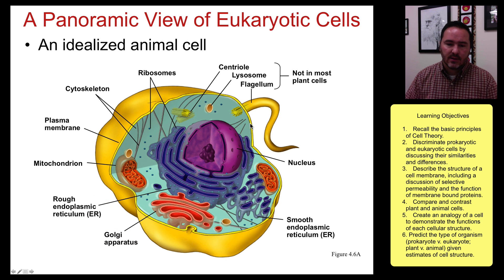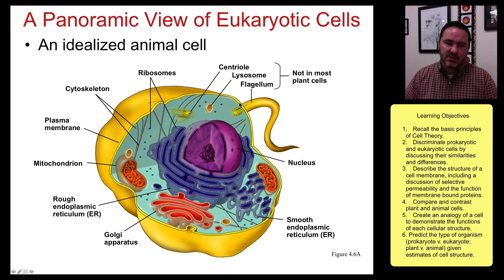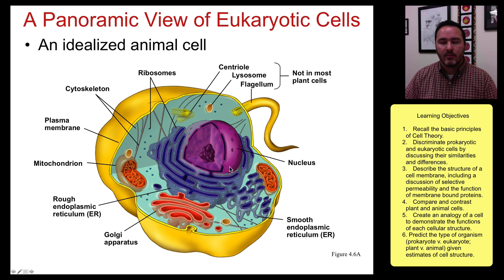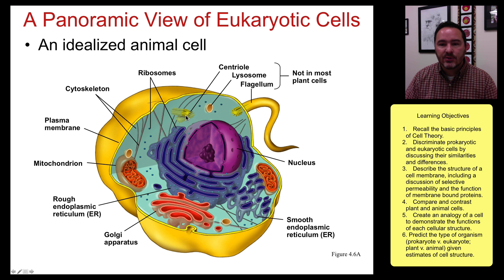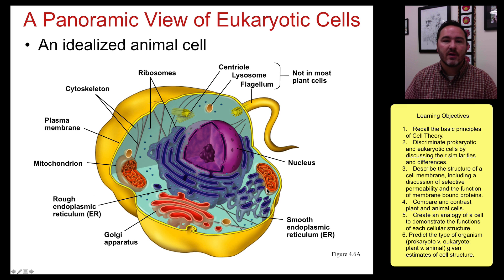A eukaryotic cell — in this case an animal cell — is much larger. It also has the plasma membrane and a nucleus, which is a double-bound membrane. Then there are organelles like the endoplasmic reticulum, Golgi apparatus, mitochondria, centrioles, and lysosomes. A flagella and some of these are not found in plant cells, and there's a host of other things as well.